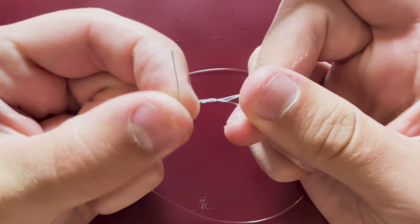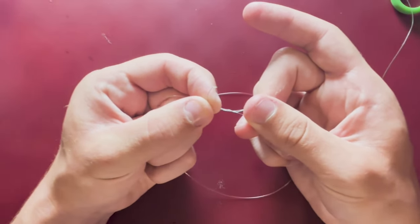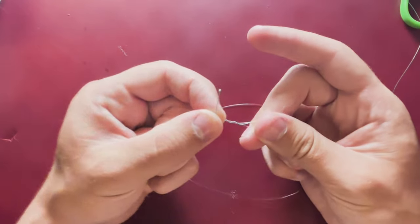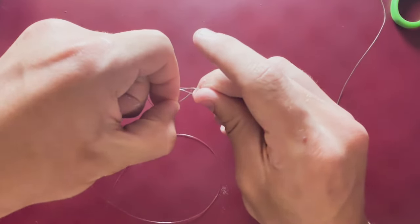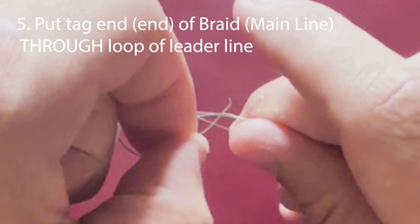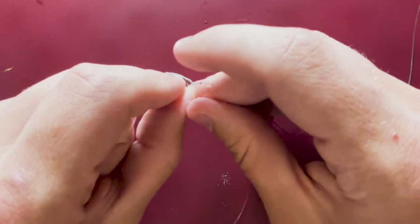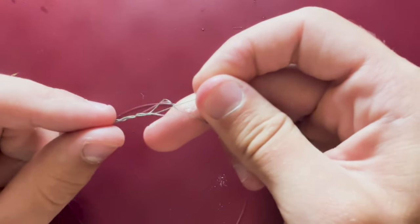Then you're going to take this tag end, this free end of your main line, your braid, and put it back through the loop that you made with your fluorocarbon or monofilament. Pull that shut.